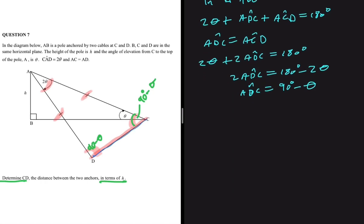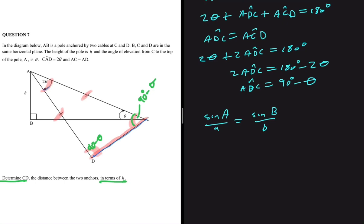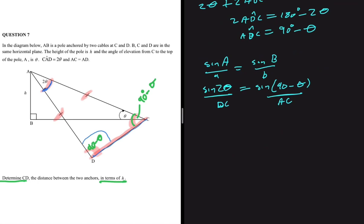We can use the sine rule: sine of A divided by side a equals sine of B divided by side b. Still in triangle ADC, we take sine of 2θ divided by the opposite side DC, equal to sine of (90° − θ) divided by the opposite side AC. Cross-multiplying, we get DC times sine(90° − θ), which is just cos θ, equals AC times sine of 2θ.